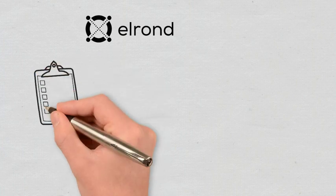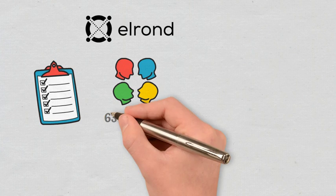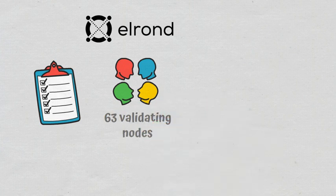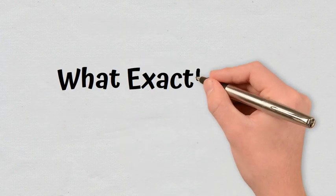In the Elrond blockchain, the secure proof-of-stake mechanism guarantees that no shard is corrupted as a set of 63 validating nodes will be randomly chosen from each shard of the blockchain. Subsequently, only one of these is selected, which will produce the next block.